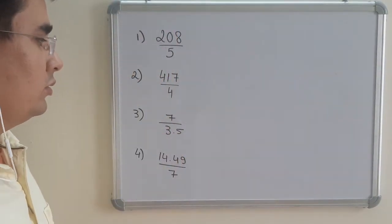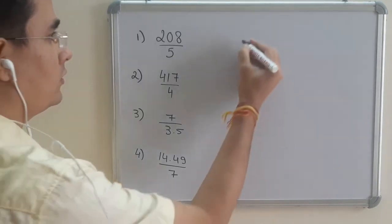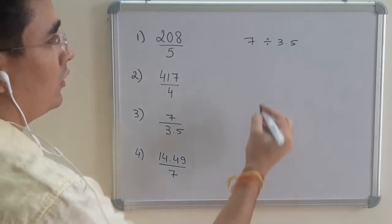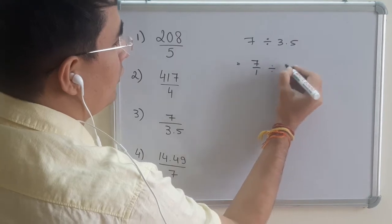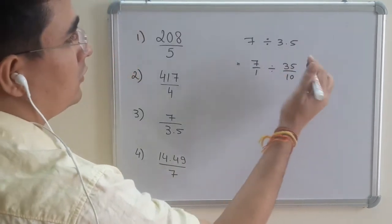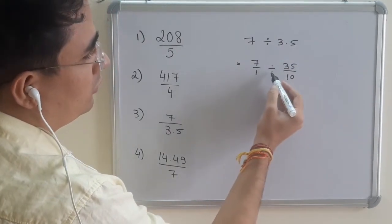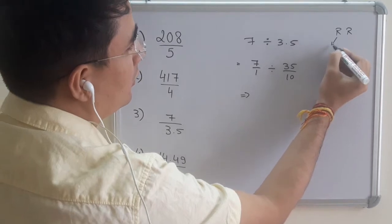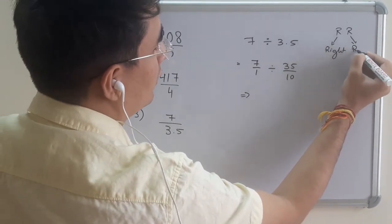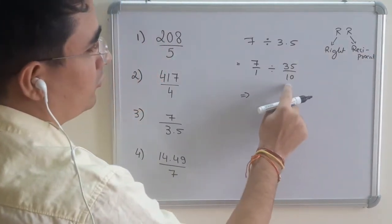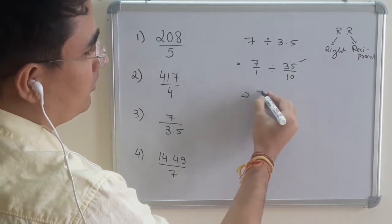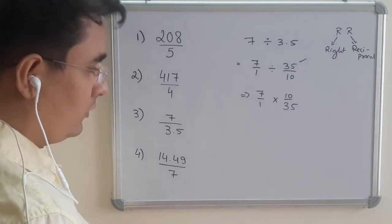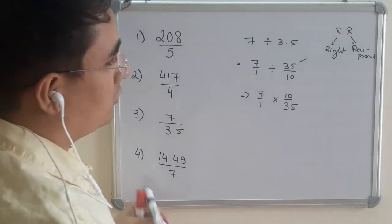Let us start with the third question: 7 divided by 3.5. In these kinds of questions, I like to convert to fractions. Whenever there is a decimal number in division, I write it as 7 upon 1 divided by 35 upon 10, since 3.5 is in the tenths place. In division of fractions, we apply the right-reciprocal rule — the number on the right side gets its reciprocal. So it becomes 7 upon 1 times 10 upon 35.